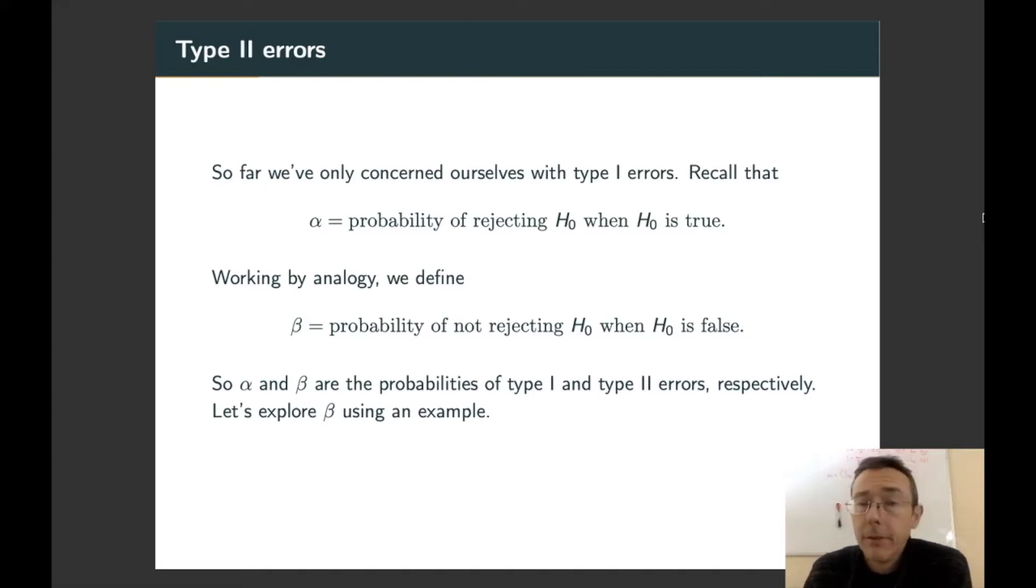If alpha is the probability of a type 1 error, we define beta to be the probability of a type 2 error, the probability of not rejecting H0 when H0 is false. Now, beta is a bit more of a complicated concept than alpha, so let's explore it a little bit using an example before we get into any of the generalities.